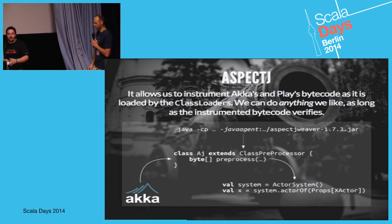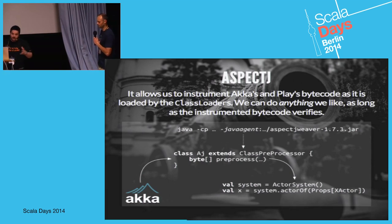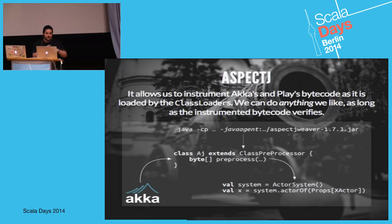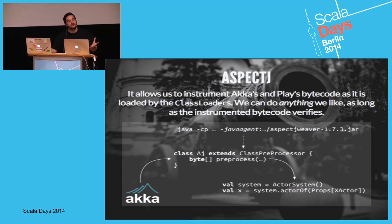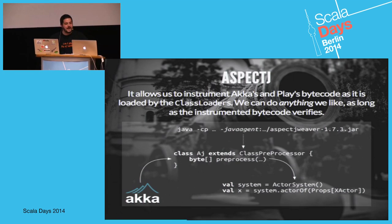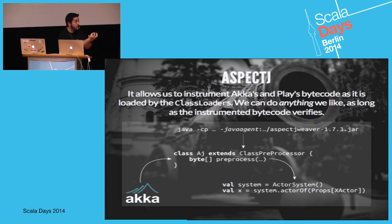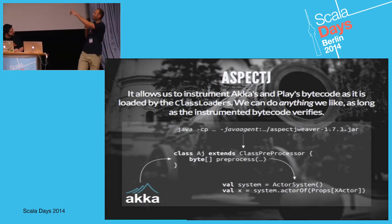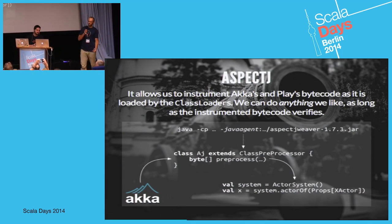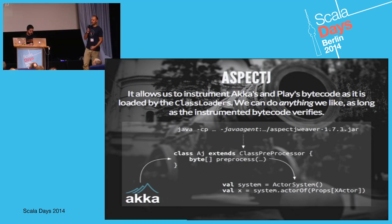A quick 101 on AspectJ: there are two types. Compile-time weaving instruments your bytecode at compile time, adding bits of code. The alternative is load-time weaving - you have a separate configuration that wraps code around certain aspects and cut-points. You write your aspects which represent the functionality you want to inject, and then a Java agent bytecode-recompiles classes as they're loaded from disk, injecting your instrumentation code.